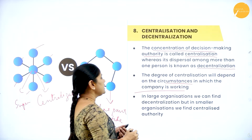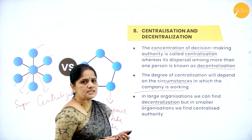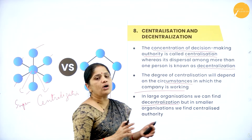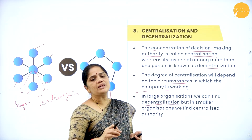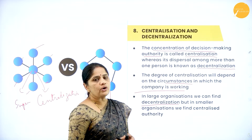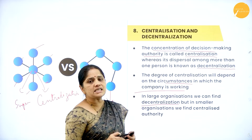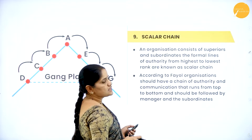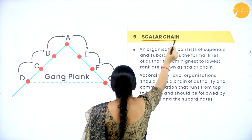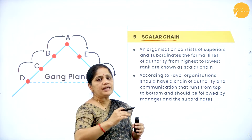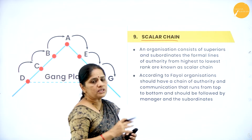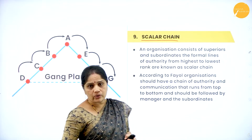The next principle is scalar chain. A company is bound by various levels of management, and each level has its own chain of authority. This chain of authority runs from top level to middle level, and middle level to lower levels of management.